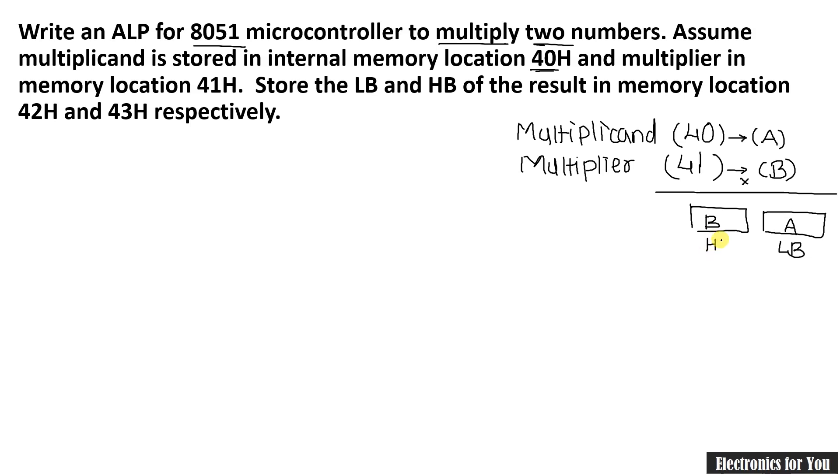Here the lower byte is automatically stored into accumulator whereas higher byte is stored into B register automatically. So I am writing here likewise. Now as per our program, store the lower byte and higher byte of the result in memory location 42H and 43H respectively.